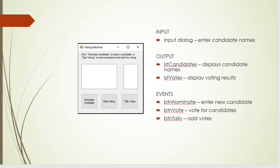So this is our form. We will click nominate candidate and an input dialog box will appear. We will enter the names and each time we enter a name, it will be entered in the list box. Then we'll click start voting. Now be able to double click any of the names and each double click equals one vote. When we click the Tally Votes button, this list box will appear with the number of votes for each candidate and a message box declaring the winner or winners, because there could be multiple winners.